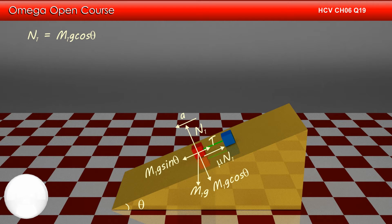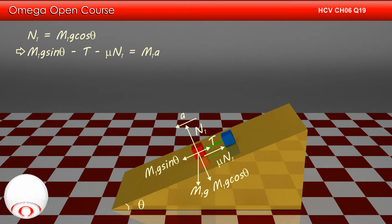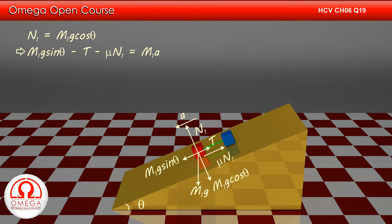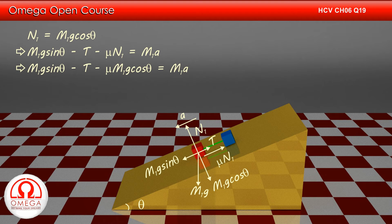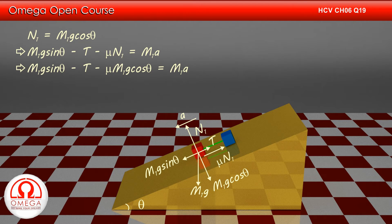Writing the equation of motion along the incline, we get M1g sin theta minus T minus mu·N1 equals M1a. Putting the value of N1, we get M1g sin theta minus T minus mu·M1g cos theta equals M1a.